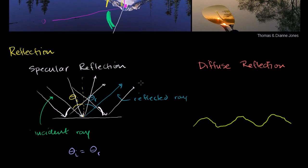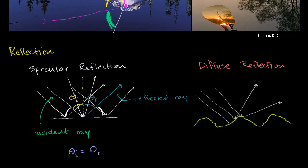For diffuse reflection, all sorts of things happen because the surface isn't smooth — the molecules making up the surface do unpredictable things to light. If light comes in at one point, it might reflect in one direction. At another point at the same angle, it might go in a completely different direction. At yet another point, it scatters in yet another direction. So the reflected rays go in all sorts of different directions and get all mixed up.